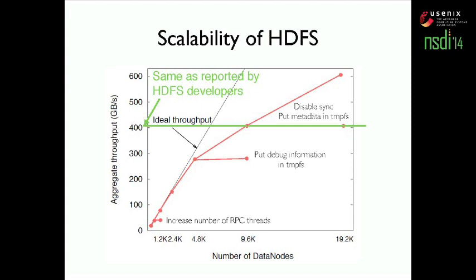We then investigate the next bottleneck: profiling shows the problem is in the logging system of the name node. The name node logs two types of information to disk — metadata operations already executed, and debug information — and it is recommended they be logged to separate disks. Unfortunately, our test machine has only a single disk, so we put debug information in tmpFS since it is not critical. After this fix, the system scales to about 400 gigabytes per second — the same throughput reported by HDFS developers from their large cluster at Facebook — and we reproduce this result with only 96 machines.